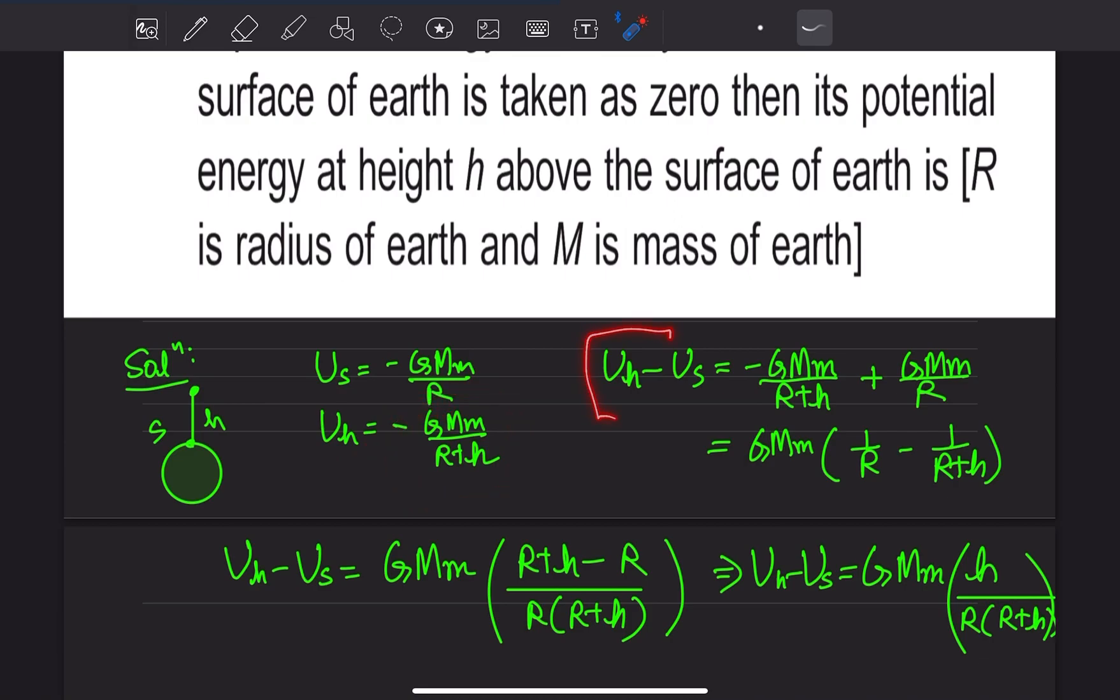Difference करेंगे इनका - U_h minus U_s. Here U_h minus, minus becomes plus. U_s: GMm common, 1 by R minus 1 by R plus h.